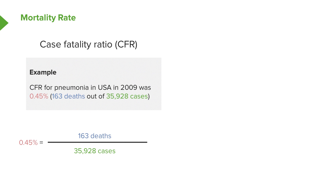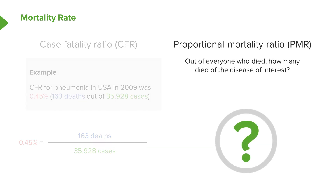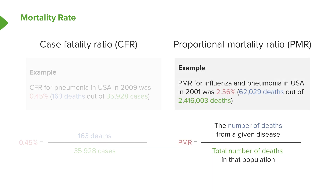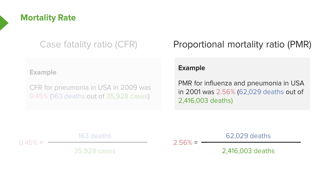For example, the CFR for pneumonia in the USA in 2009 was based on 163 deaths out of about 35,000 cases — that's about 0.45%, which is quite low. So if you get pneumonia in the USA, you'll probably not die from it. Another measurement is the proportional mortality ratio, or PMR, which tells us how much a certain disease is responsible for all deaths in a population. We take the number of deaths from the disease and divide by all deaths in that population. The PMR for influenza and pneumonia in the USA is about 62,000 deaths over 2 million total deaths — about 2.56%. Comparing the 0.45% CFR to the 2.56% PMR tells us that while your chances of survival are quite good, the disease constitutes a fairly robust proportion of total deaths in the population.